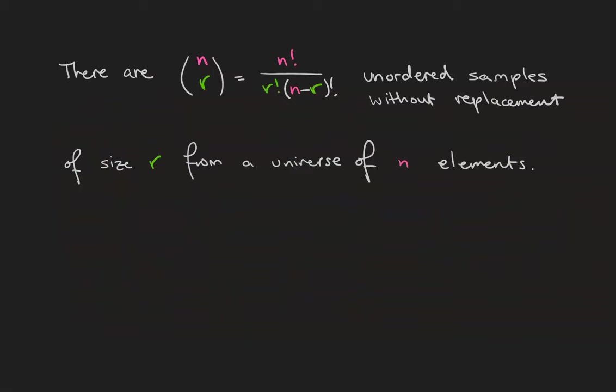So in general there are n factorial divided by r factorial divided by n minus r factorial ways to choose an unordered sample without replacement of size r from a universe of n elements. This number is read n choose r and is called a binomial coefficient for reasons we'll see in the next couple of videos.